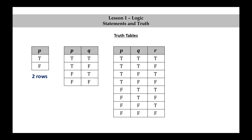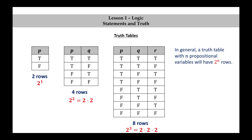Notice that when there is one propositional variable, we have two rows. For two propositional variables, we have four rows. And for three propositional variables, we have eight rows. Do you see the pattern? Two is 2 to the 1; four is 2 to the 2, or two times two; eight is 2 to the third power, or two times two times two. So in general, a truth table with n propositional variables will have 2 to the n rows.